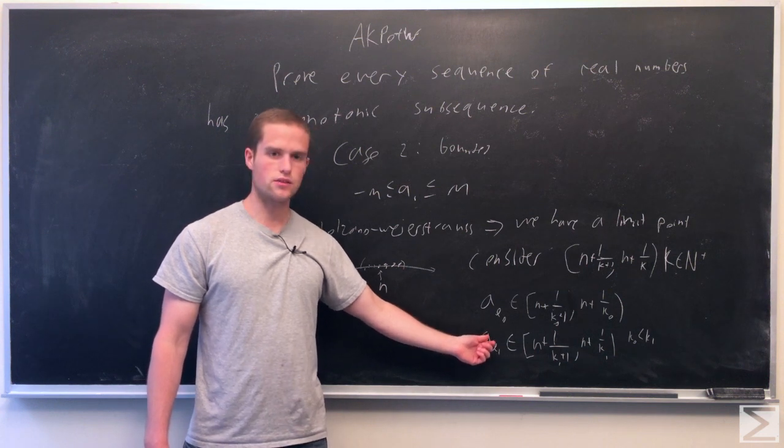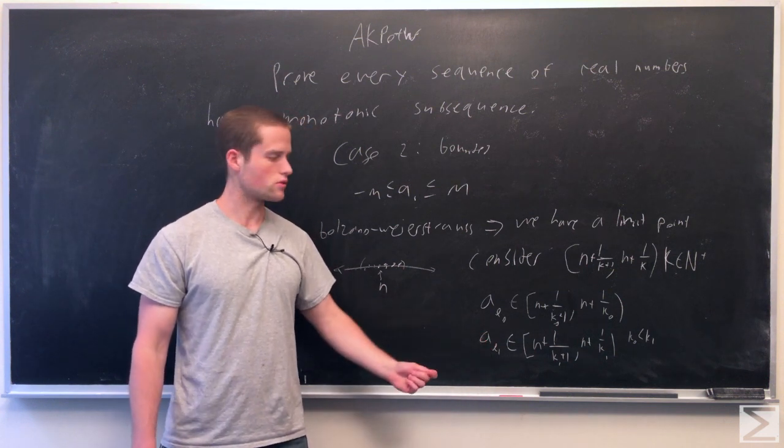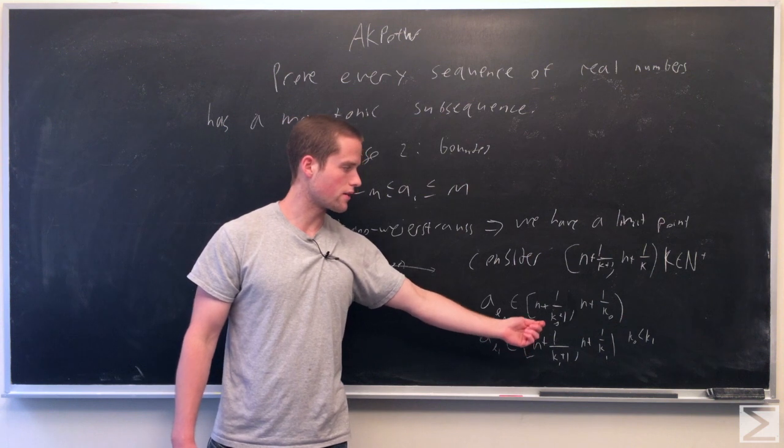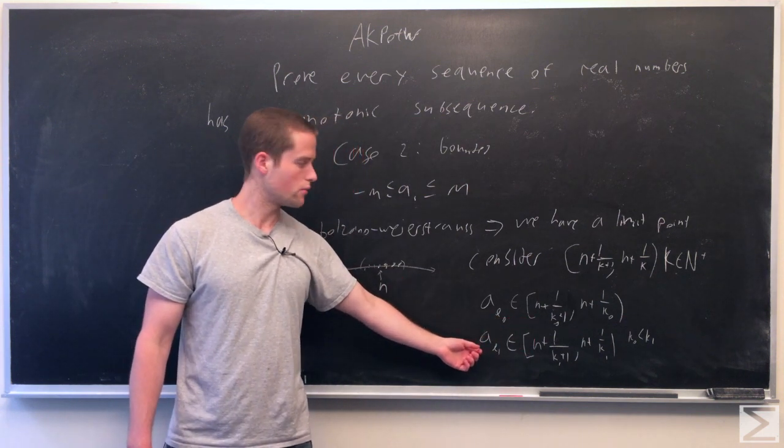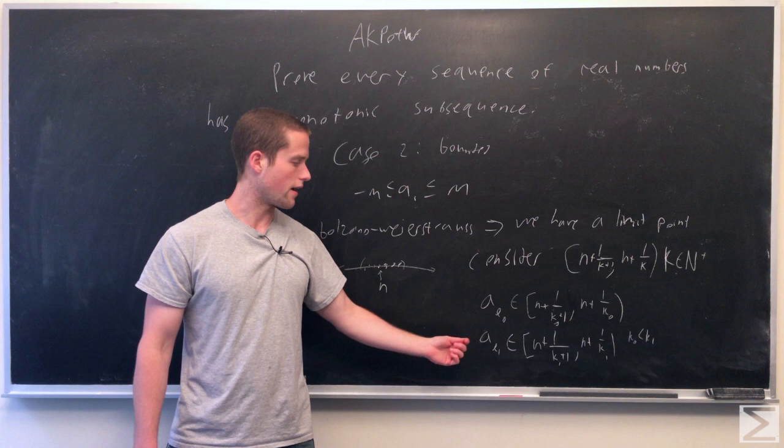Next, we're going to keep increasing k0, so go k0 plus 1, k0 plus 2, until we come across some k1 greater than k0, such that another point which comes after AL0.